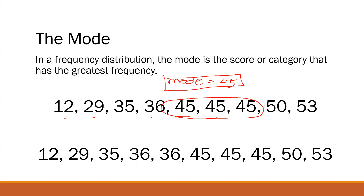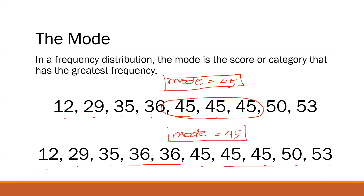In our second example, we have 12, 29, 35, 36, 36, 45, 45, 45, 50, 53. As we can see, 36 appeared twice and 45 appeared three times. Therefore, 45 is more popular than 36, so our mode is still 45. The advantage of the mode compared to the mean and median is that it's the easiest to determine — you just look for the most popular score.